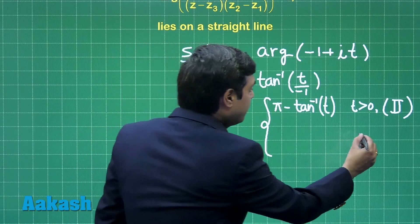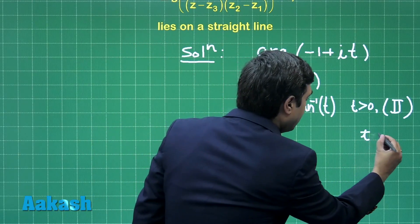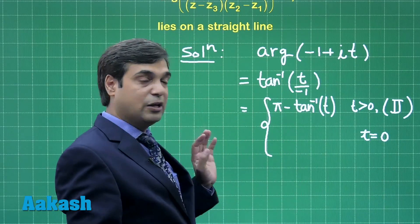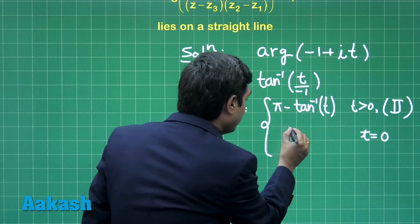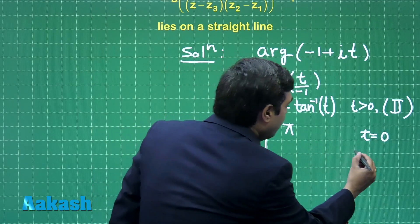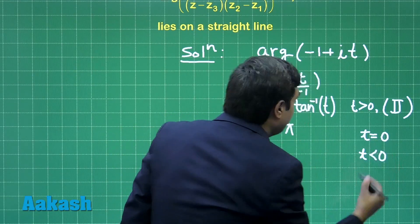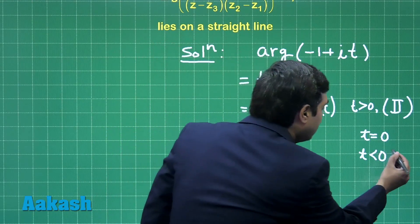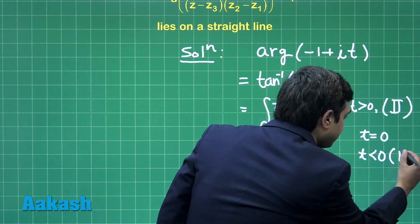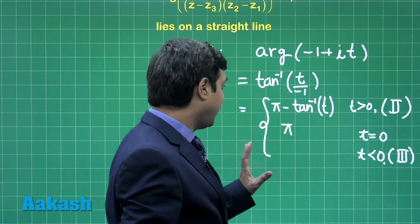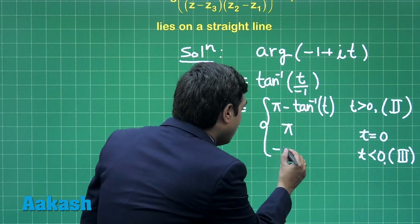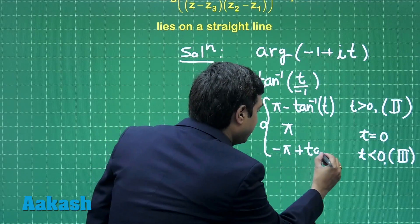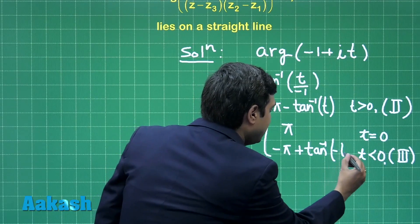Now when t is 0, the value is 0 upon minus 1, meaning on the left side. The value this time comes out as pi. When t is negative, we find the number is negative upon negative, meaning in the third quadrant. It is lying in the third quadrant, meaning it will become minus pi plus tan inverse minus t.